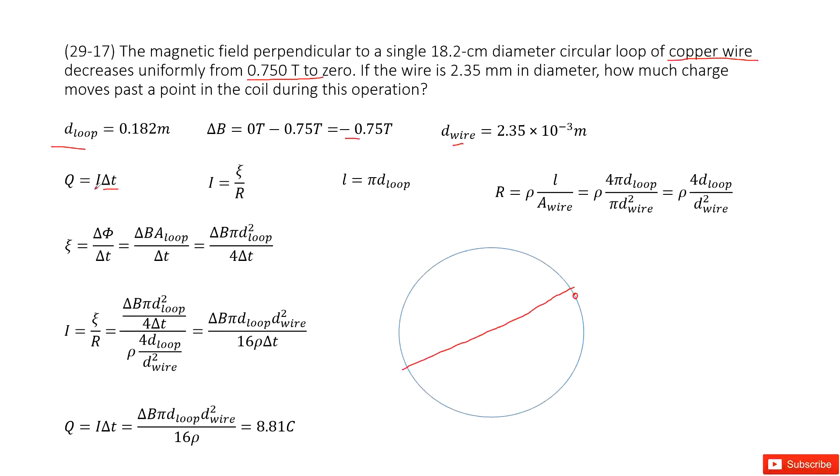So where does this current come from? This current is induced current. We can use induced emf divided by resistance for this loop.